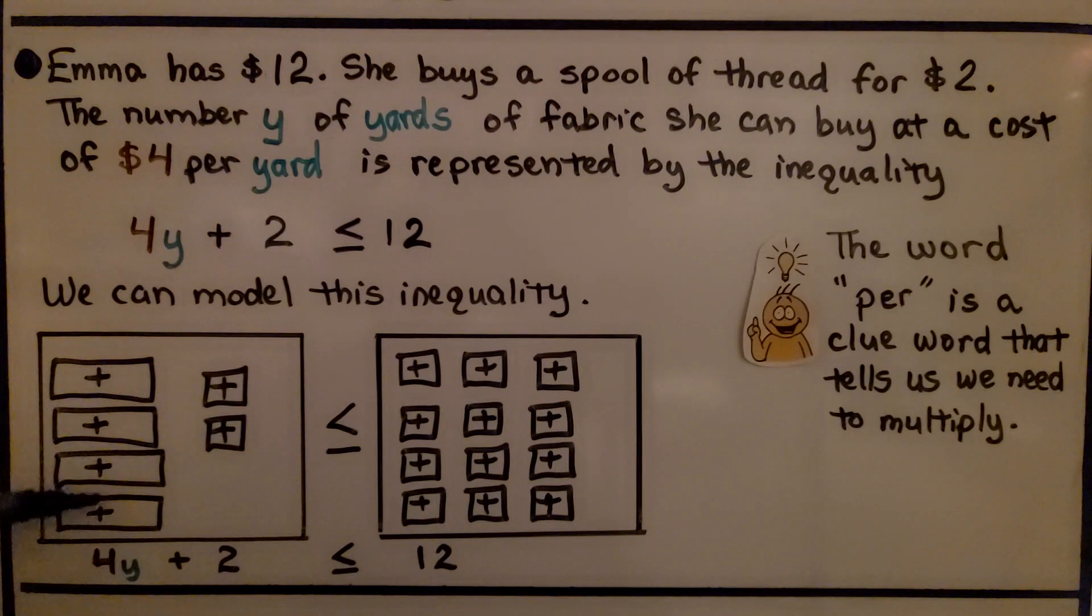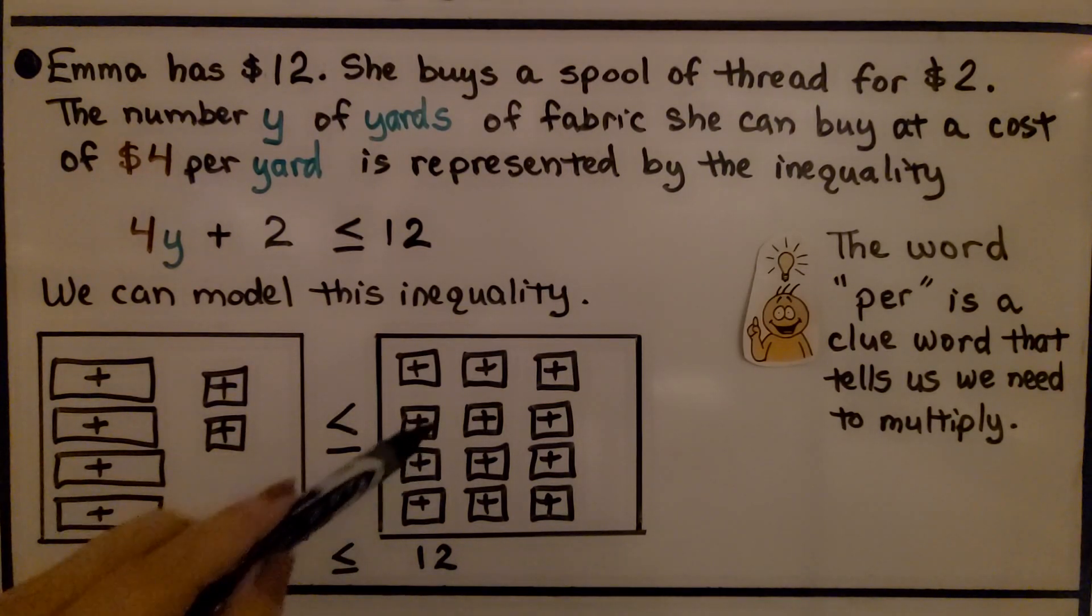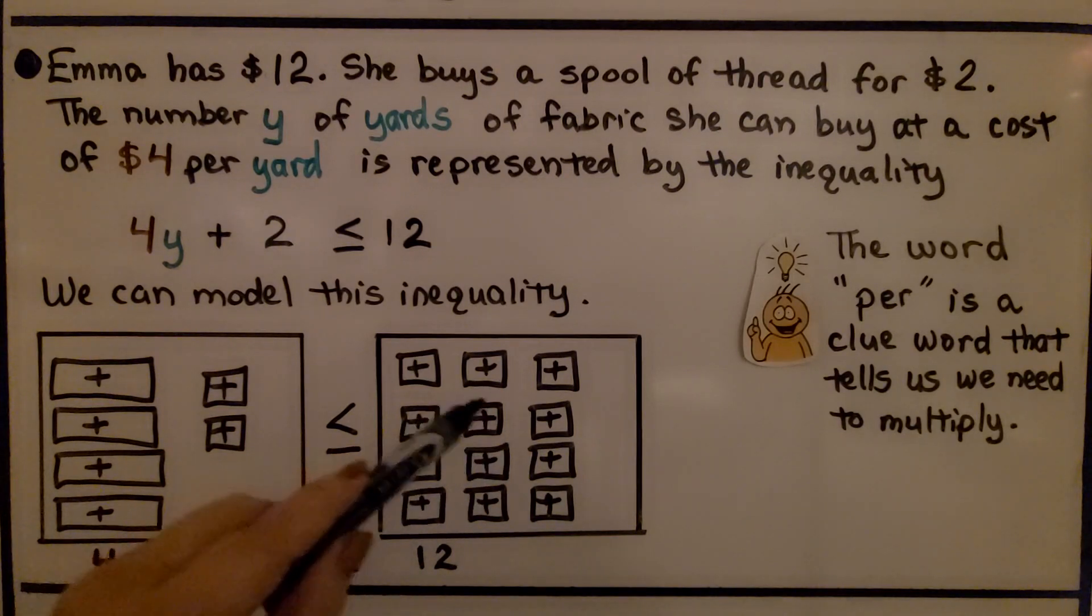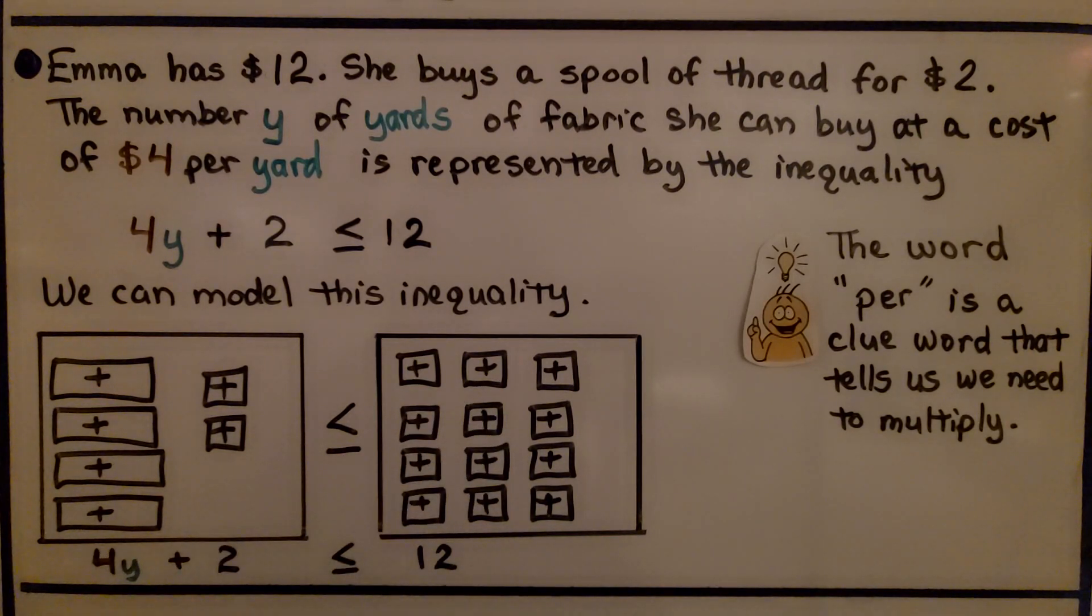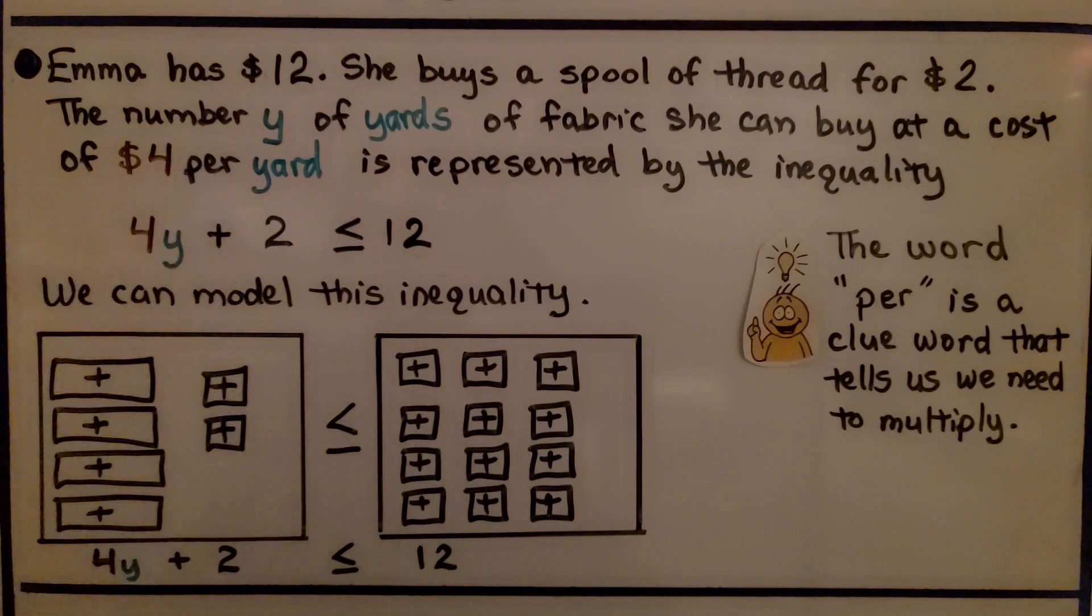And we can model this inequality. We've got 4 for the 4y, representing the variable. And we've got two positive squares for the plus 2. In between the two mats, we have is less than or equal to. And on this side, we have 12 plus squares for a positive 12. Now, the word per is a clue word that tells us to multiply. We're doing 4 times the number of yards, so it's 4y.